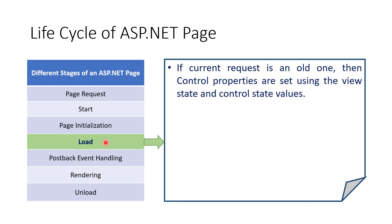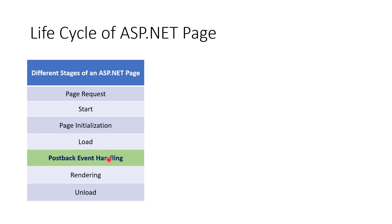The fourth stage is Load. In this stage, if the current request is a postback, the properties of controls on the page are loaded with data from the view state and control state.